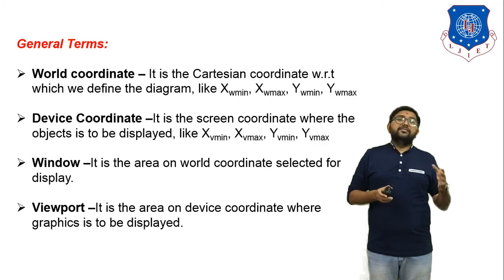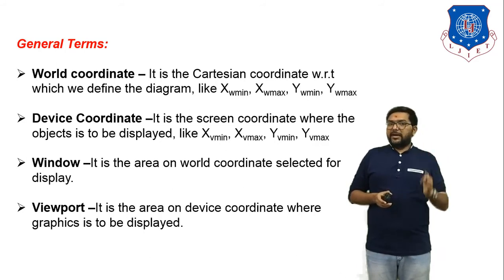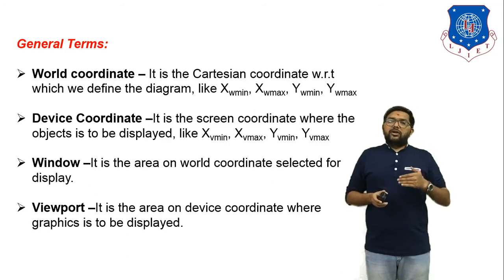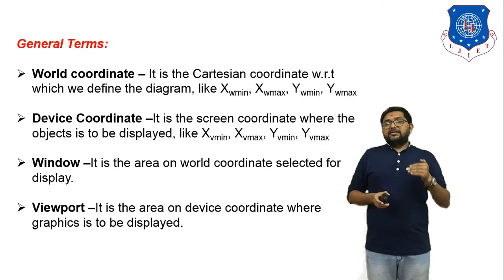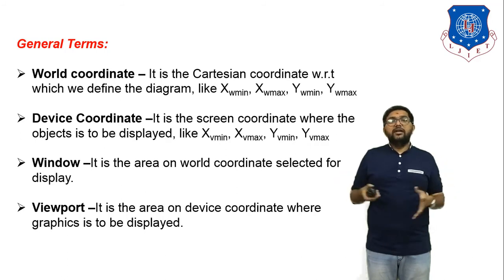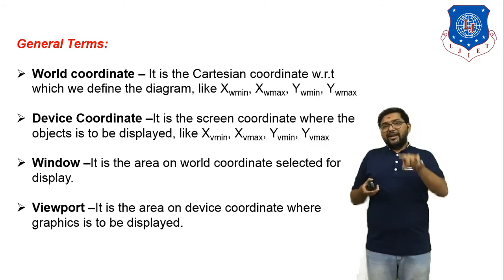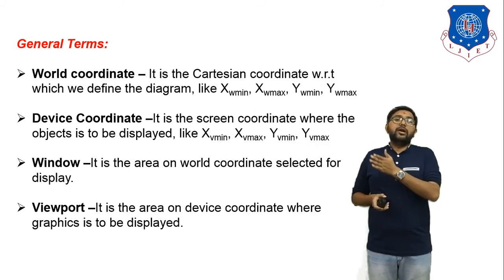In today's session we discussed two main topics. First, orthographic projection — already learned in engineering graphics — which has two methods: first angle and third angle. Second, perspective projection — which has three methods: one-point, two-point, and three-point perspective projection. The third topic was window-to-viewport transformation: if you have a complicated or large object and want to analyze a small portion, you select that area and display it on another screen.